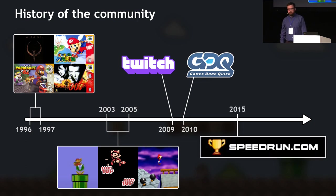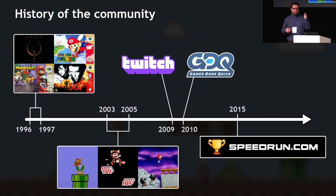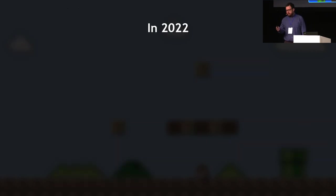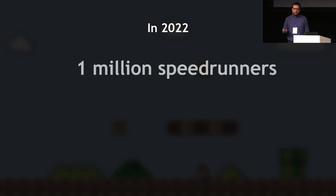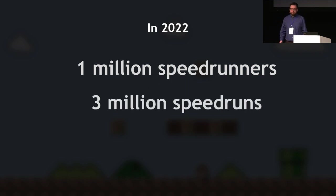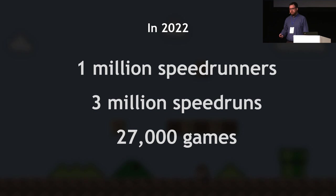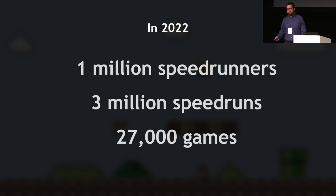A few years later in 2015 came the creation of speedrun.com, a leaderboards website that gathered everyone on a central hub where every leaderboard was available — world records, everyone's times. From there, the community could only grow larger. As of 2022, speedrun.com has one million users — one million speedrunners — who have done three million speedruns across 27,000 games. The community has gone from a very niche part of a niche hobby to a pretty major part of a very mainstream hobby.